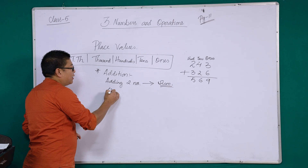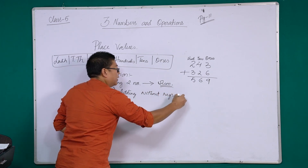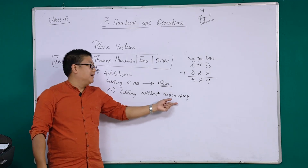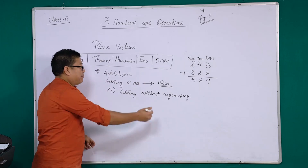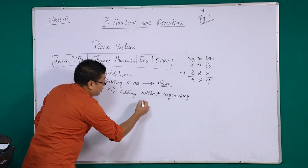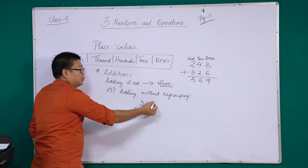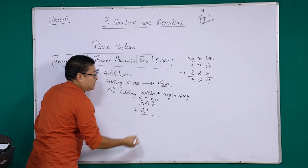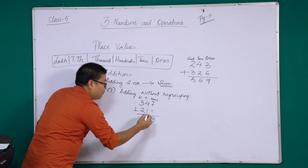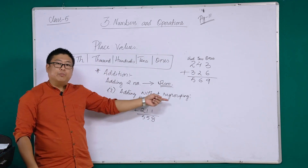When you add, there are two types. The first is adding without regrouping. Adding without regrouping simply means there will be no carryover. That means when you add two numbers, the result will not reach ten — it will not be more than nine. For example, take 347 and 211. Seven plus one is eight, four plus one is five, three plus two is five. All of them are adding up to a single digit number, so this is called addition without regrouping.